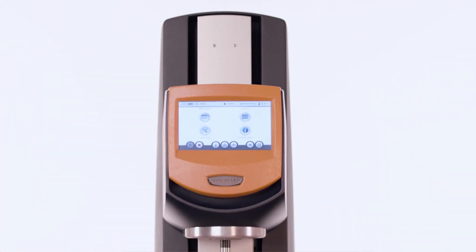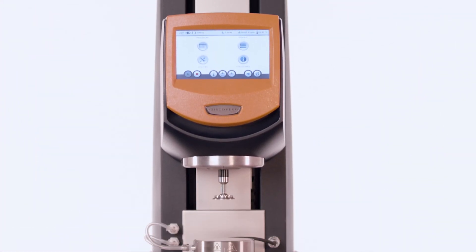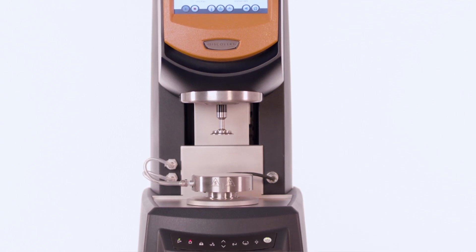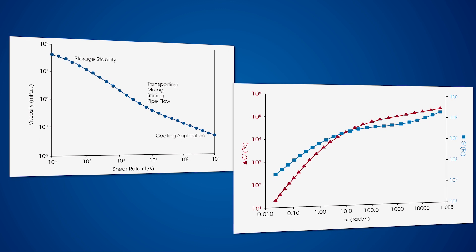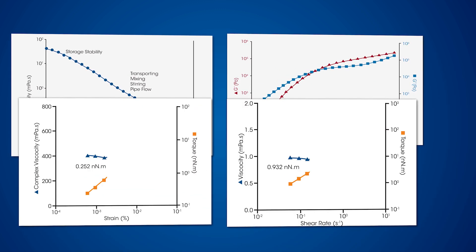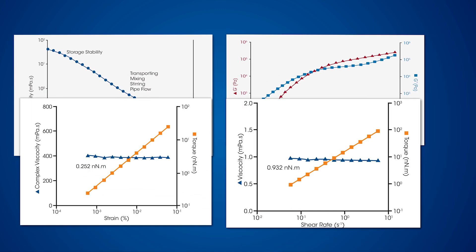The Discovery Hybrid Rheometer is designed for scientists who need to collect better data under the widest range of conditions. Whether making rotational or oscillation measurements, the Discovery Hybrid Rheometer delivers unparalleled sensitivity and accuracy.